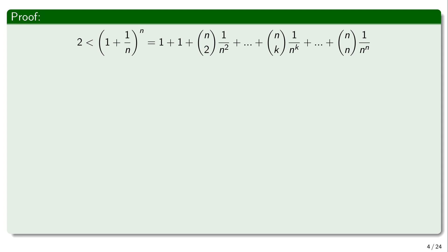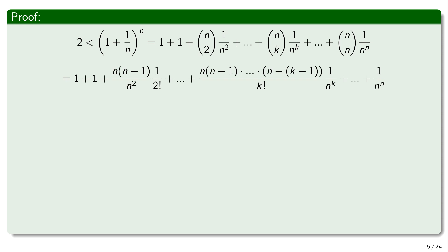We proceed with the computation using the formula for the binomial coefficient. The general term n choose k equals n! divided by (n − k)! divided by k!. So n choose k times (1/n)^k gives us a product of terms of the form n times (1/n), and we sum those terms up to the (1/n)^n term.